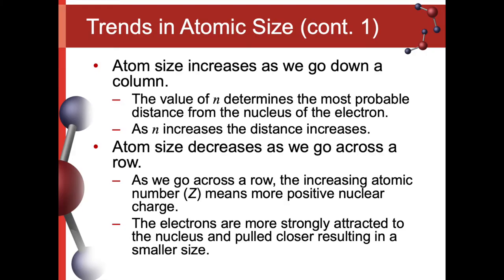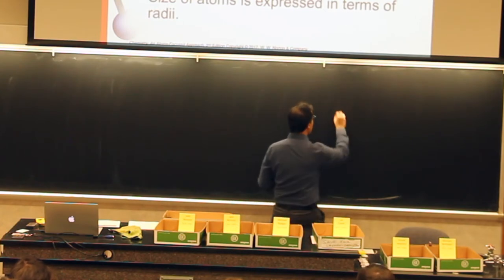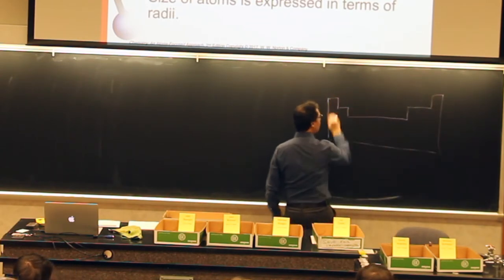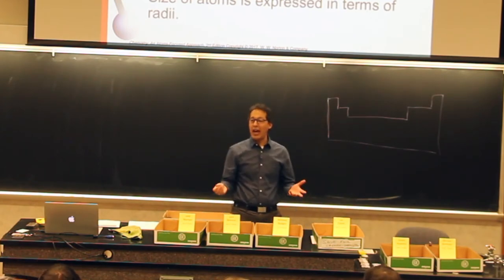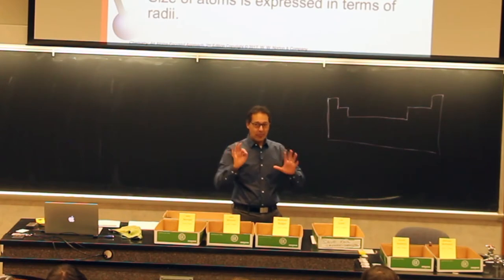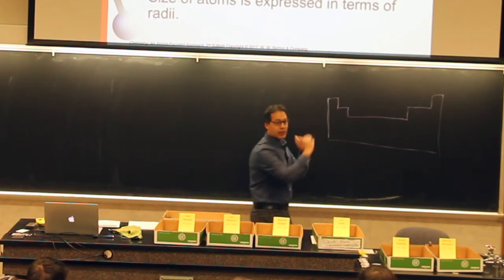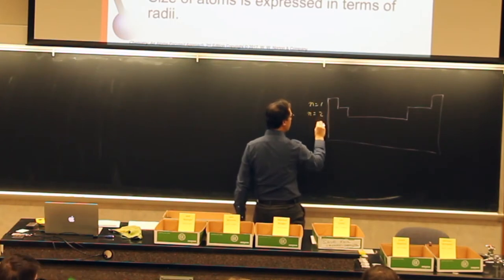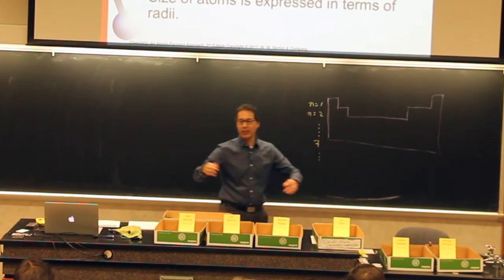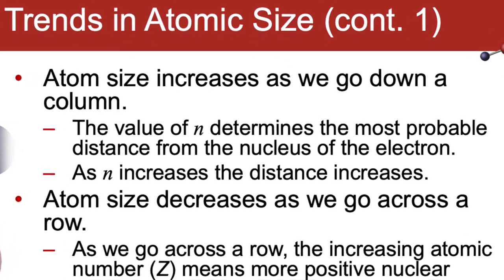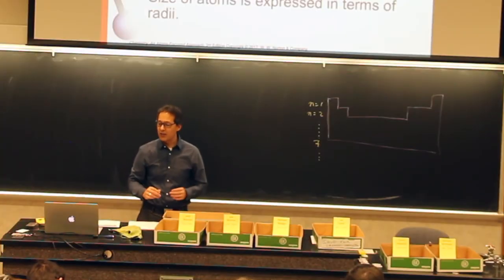The explanation of the relative size of atoms has something to do with the value of n. If we draw a periodic table — this is an artistic representation, not a real one — on this periodic table we have all of these elements. We have different values of n: up here n equals 1, n equals 2, and it goes all the way down to 7, and could continue if we find more elements. These values of n tell us the size and energy of orbitals — this is our first quantum number.